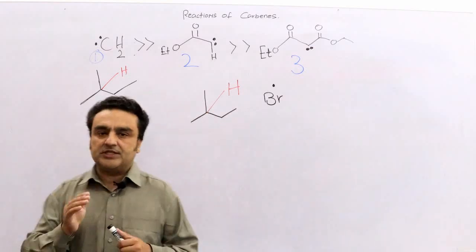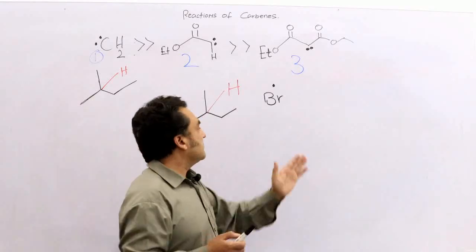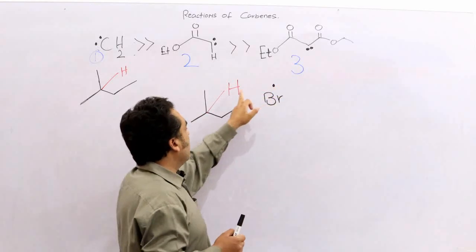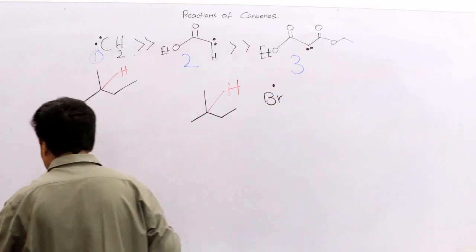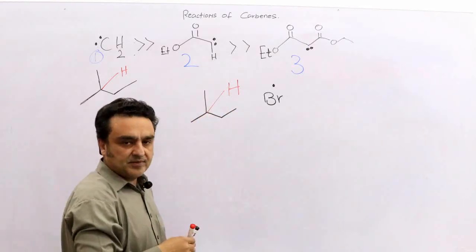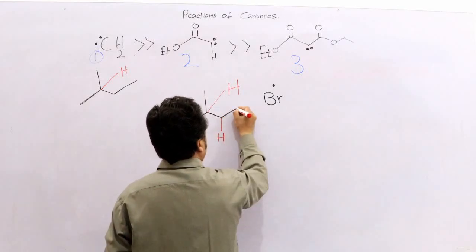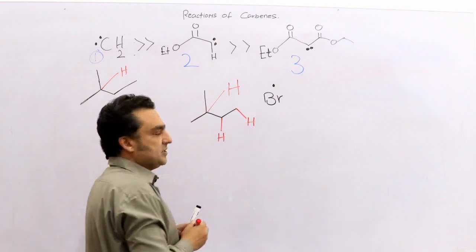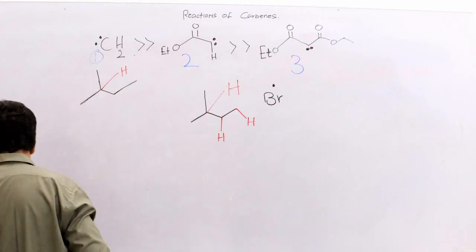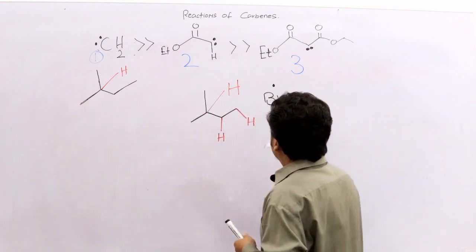At low temperature, this bromine radical is much more selective. It will go and abstract the tertiary hydrogen — the hydrogen attached to a tertiary carbon atom — and not the secondary or primary one. So it is more selective. In the major product, it will abstract the tertiary hydrogen. Why this happens will be clear in a moment.